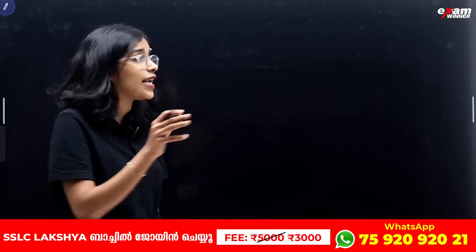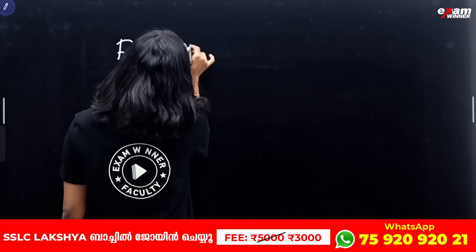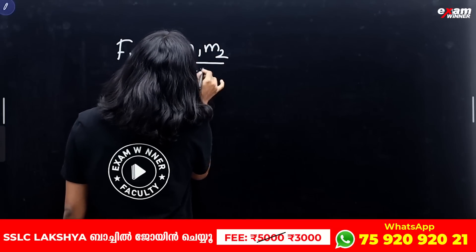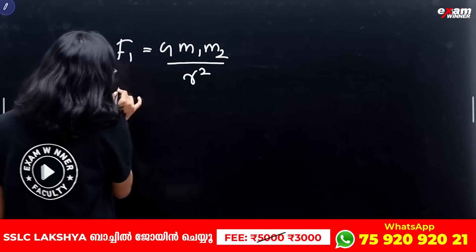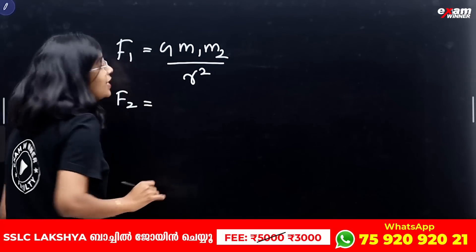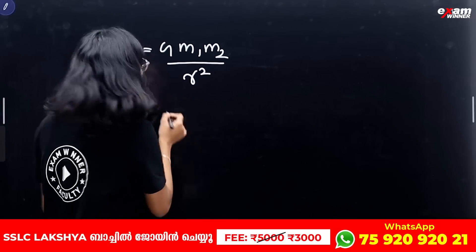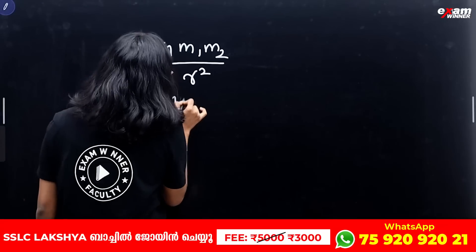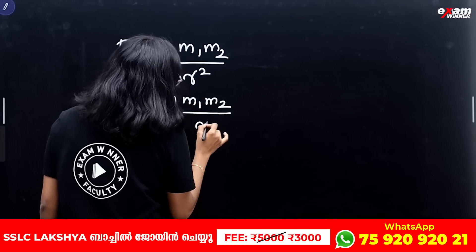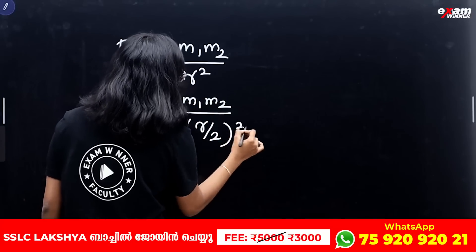We have force of attraction F1 = G M1 M2 divided by R squared. For figure 2, where the distance is R/2, we write F2 = G M1 M2 divided by (R/2) whole squared.